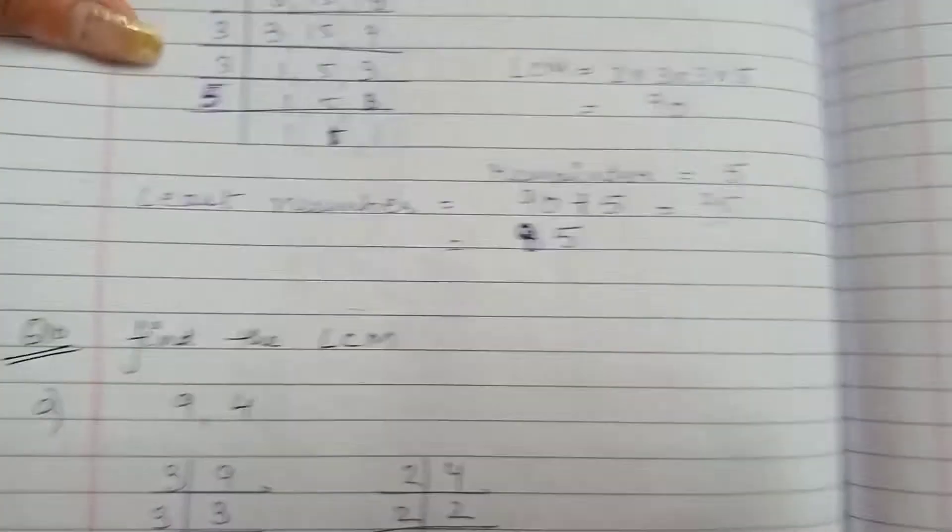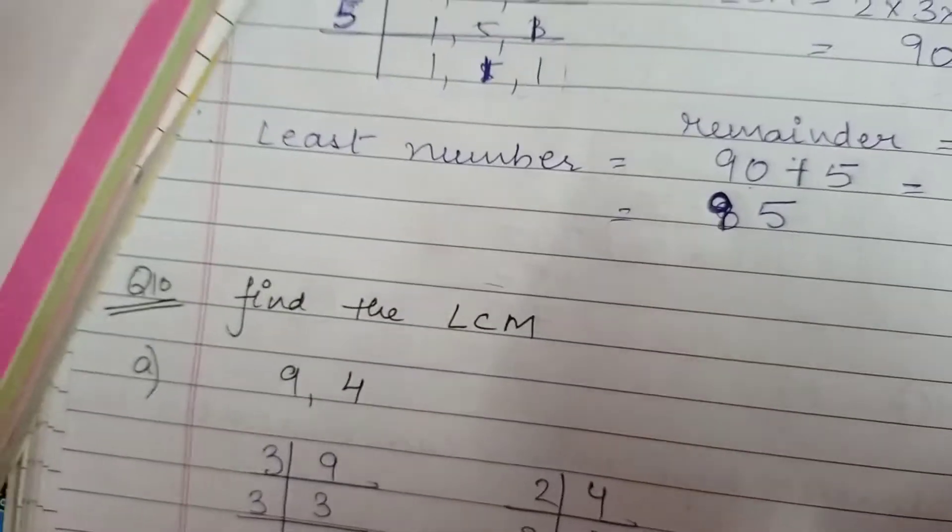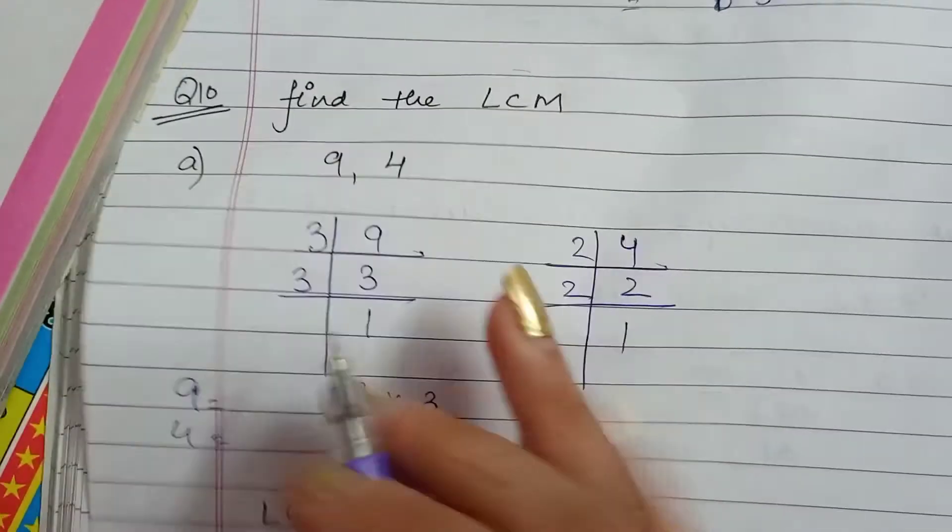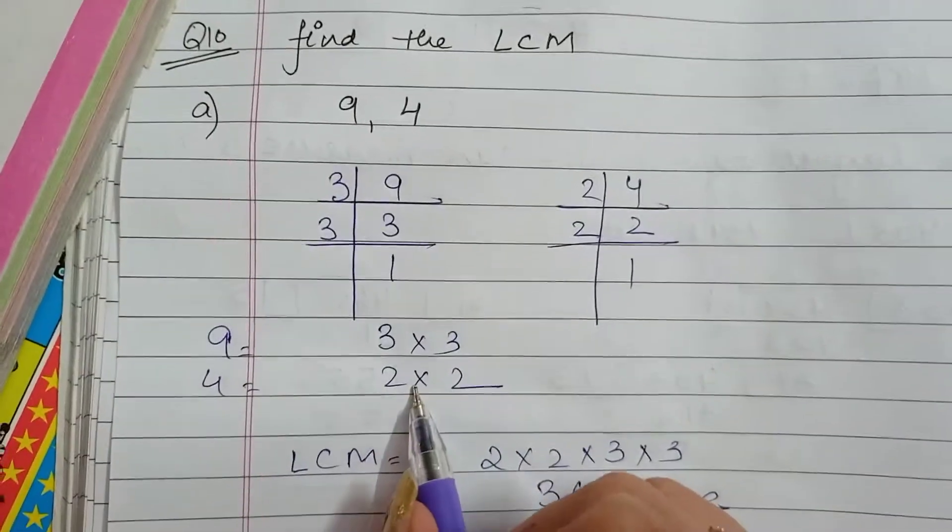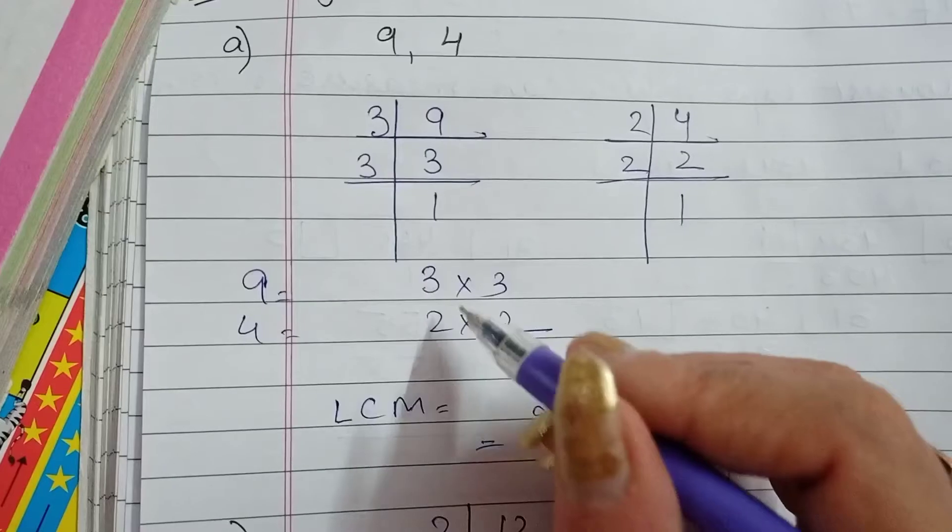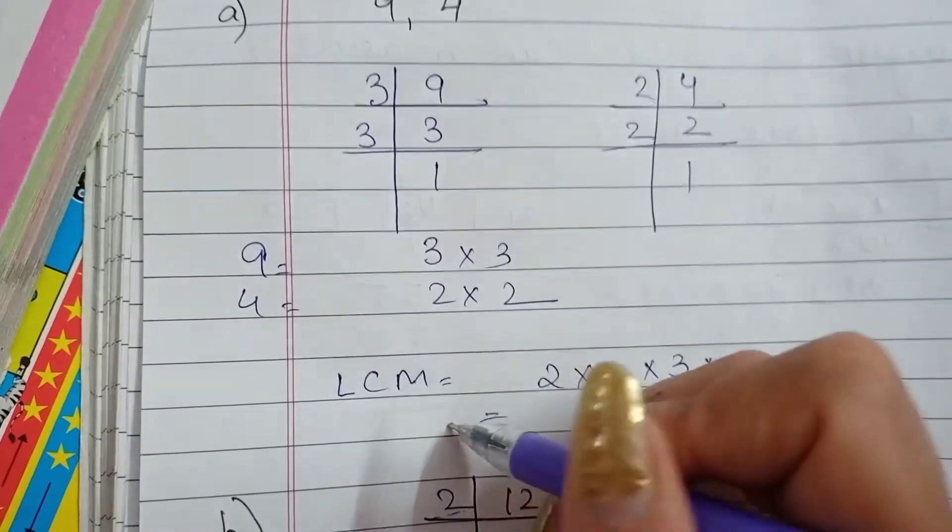Now in prime factorization method what we will do? We will find the prime factors. 9 separately, 4 separately. I have written and copied it here. As you can see we are not having any common multiple over here.